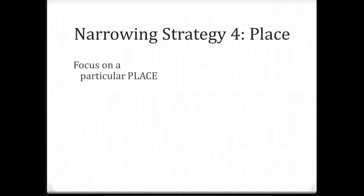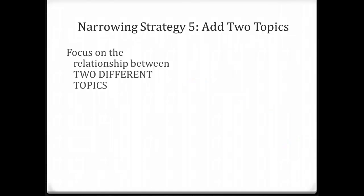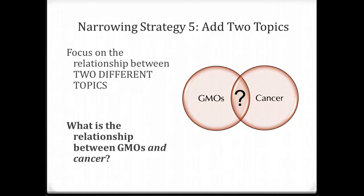You may also narrow your topic by focusing on a place, as in: how are GMOs produced in Hawaii? Finally, you can combine two topics and make your research question about the relationship between the two. For example, what is the relationship between GMOs and cancer?